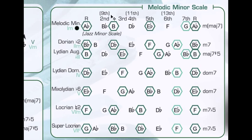Up here we have scale degrees indicated — there's the root, the second scale degree, the third scale degree. Since we've flatted it, it would actually be a flat third rather than just a third. This shows you the diatonic scale degrees that occur in the major scale, so you have to interpolate — if something isn't noted you just have to call it a flatted second.